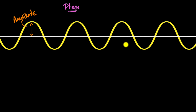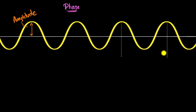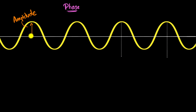Another important feature of a wave is its wavelength. You can think of wavelength as the distance between any two consecutive peaks, or any two consecutive valleys, or in fact any two consecutive points which are in phase with each other.